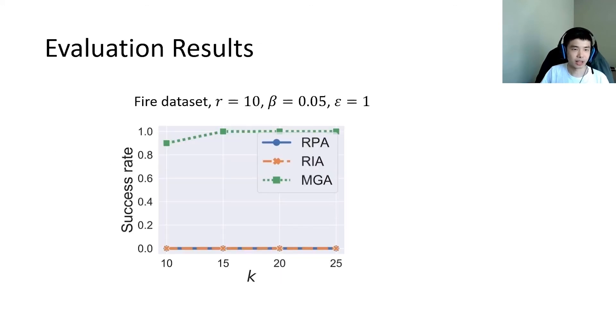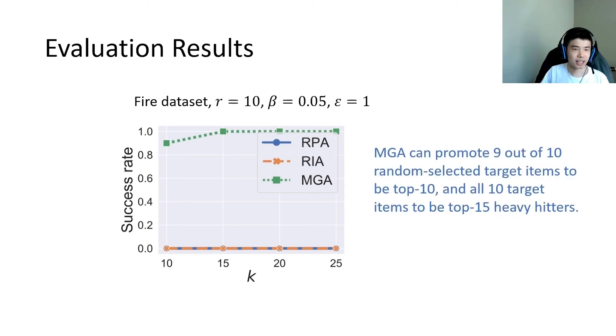Here are some evaluation results on the heavy hitter attacks. We can see that with only 5% fake users injected, MGA can promote 9 of the target items to be top 10 heavy hitters, and all 10 target items to be top 15 heavy hitters.